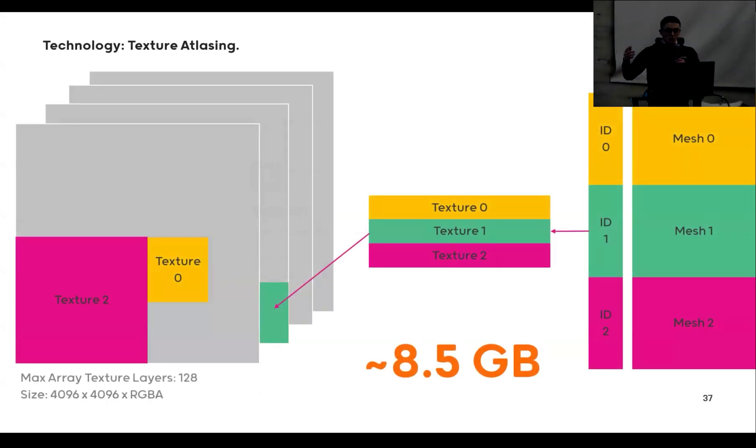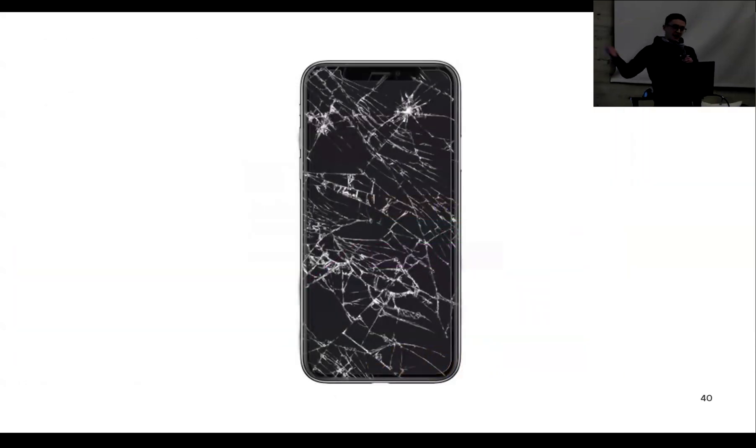All right, so we can maybe just use 128 textures. Could be enough for a nice web game, I don't know. That's still 8.5 gigabytes. All right, let's use texture compression. Maybe ASTC 4x4 with 8 bits per pixel. That's 2.1. Getting there. ETC1S, 4 bits per pixel, 1 gigabyte.